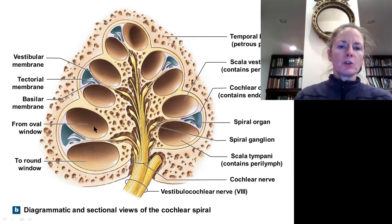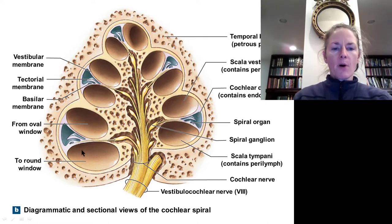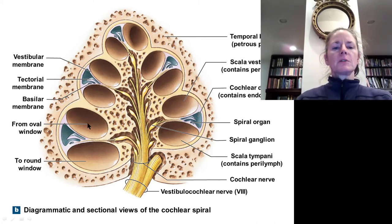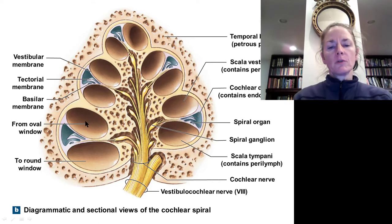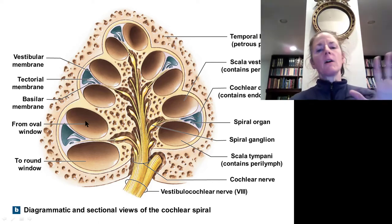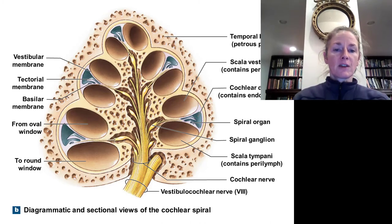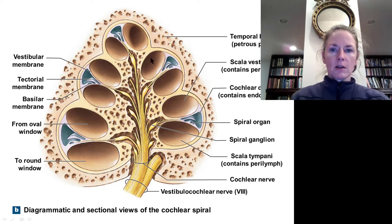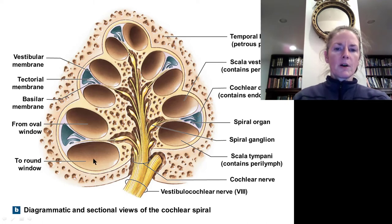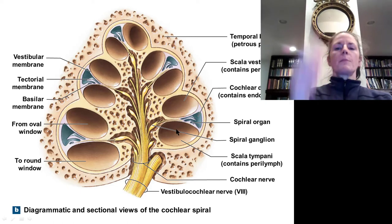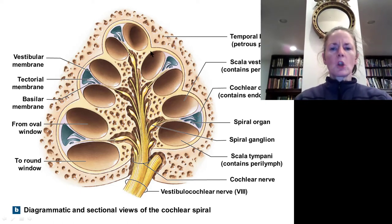The scala vestibuli is continuous with the oval window, so the oval window presses on the fluid within the scala vestibuli. The scala vestibuli wraps around the entire coiled structure. The scala tympani is the other chamber, also wrapping around as the cochlea coils on itself. This is one long continuous structure, and the round window is the interface at the end of the scala tympani.